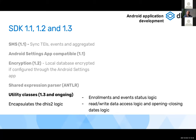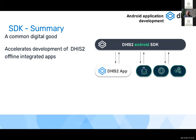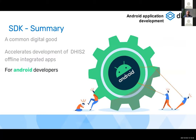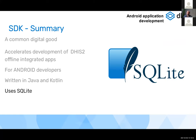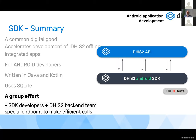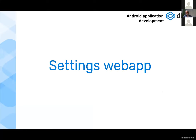Quick summary: the SDK is a common digital good that accelerates development of DHIS2 offline-integrated Android apps. It is written in Java and Kotlin, uses SQLite as the database, and is a group effort — we work together with the DHIS2 backend team to identify the most useful endpoints and ensure efficient API calls.